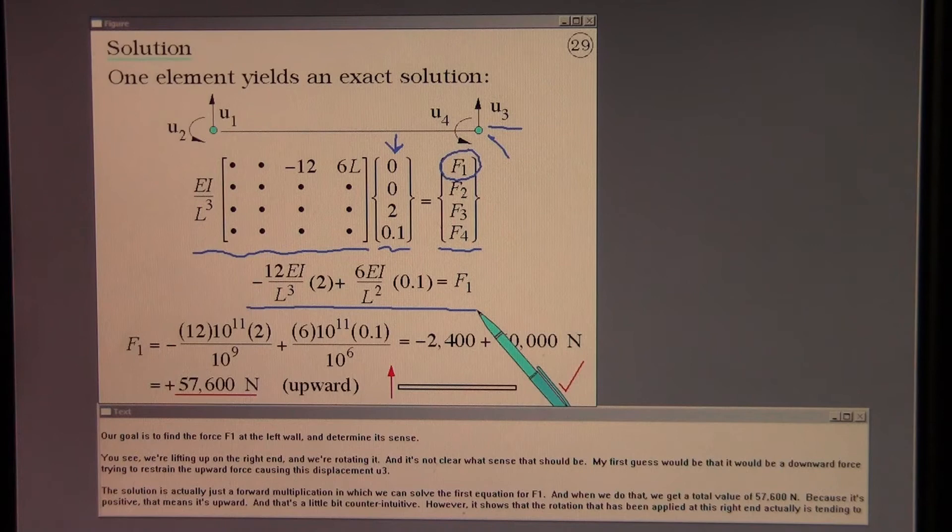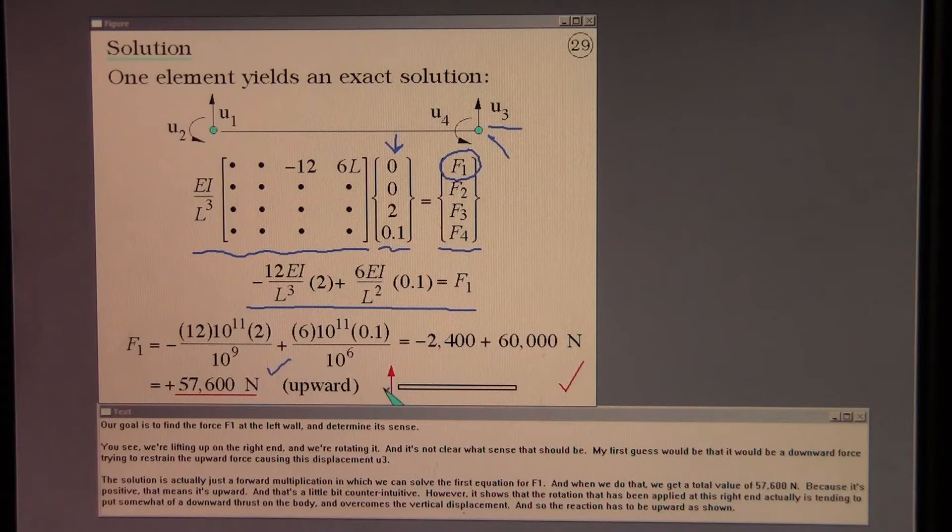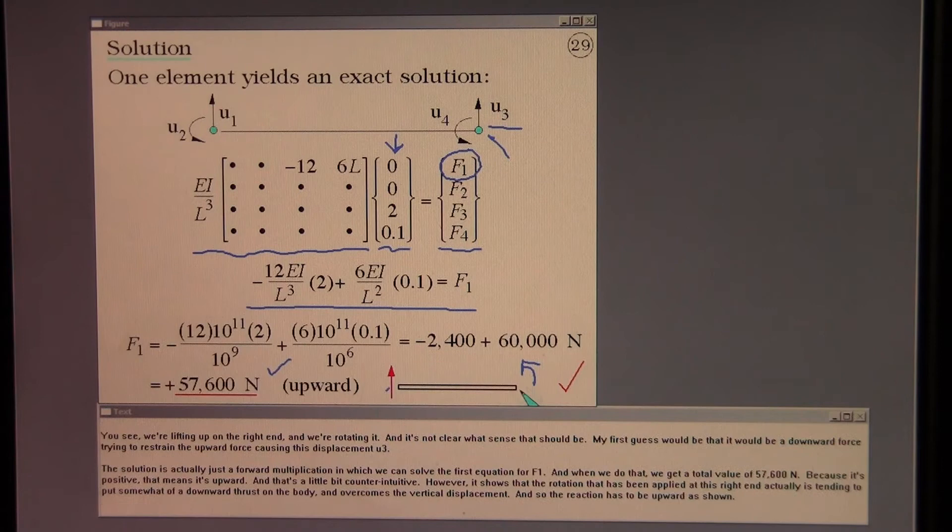So it's definitely in the tradition of the displacement boundary element method that you specify the displacements and that causes forces. But it is an unusual way to state a boundary value problem. Our goal is to find the force F1 at the left wall and determine its sense. You see we're lifting up on the right end and we're rotating it and it's not clear what sense that should be. My first guess would be that it would be a downward force trying to restrain the upward force causing this displacement U3. The solution is actually just a forward multiplication in which we can solve the first equation for F1. And when we do that we get a total value of 57,600 Newtons. Because it's positive that means it's upward.